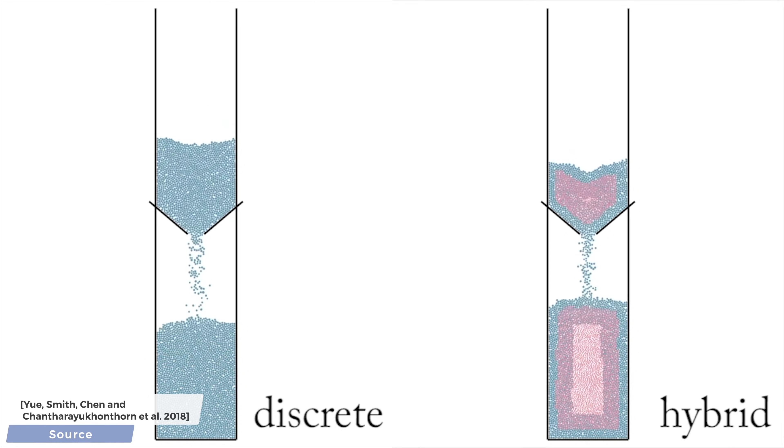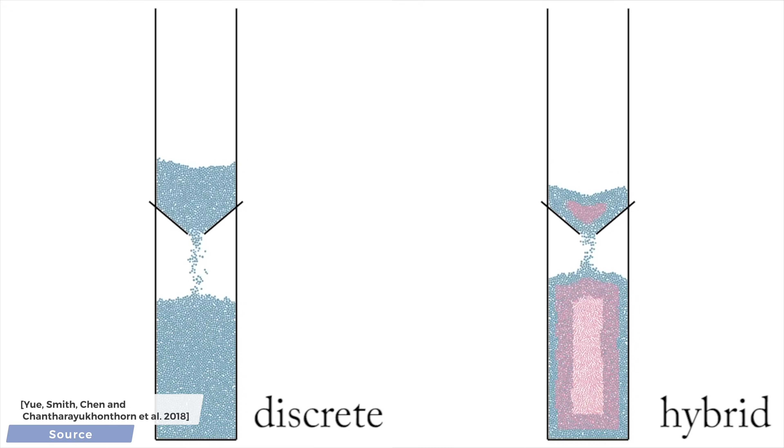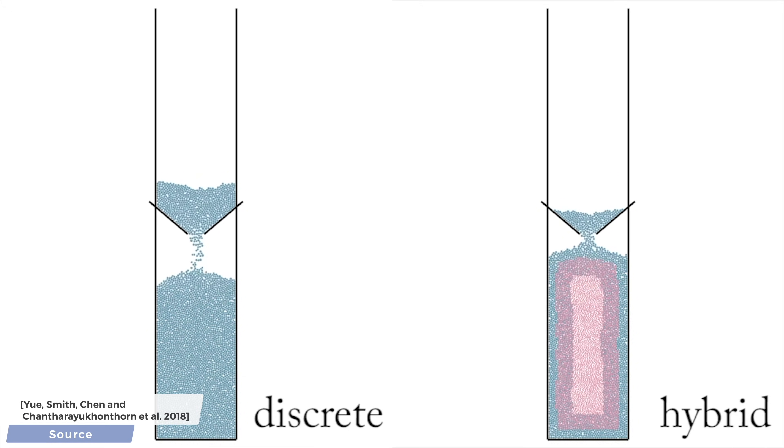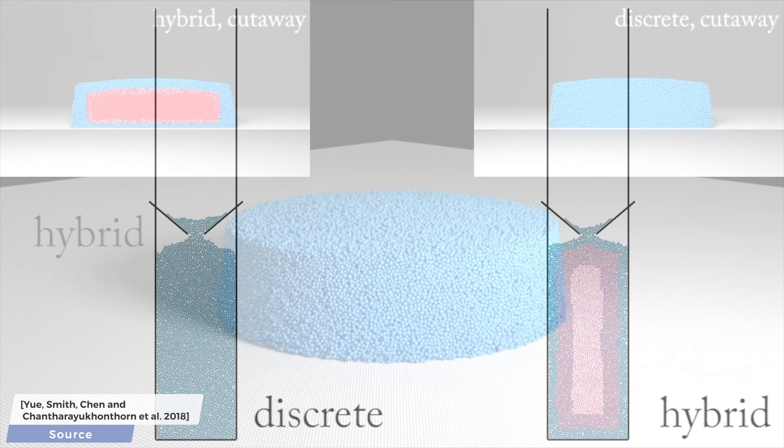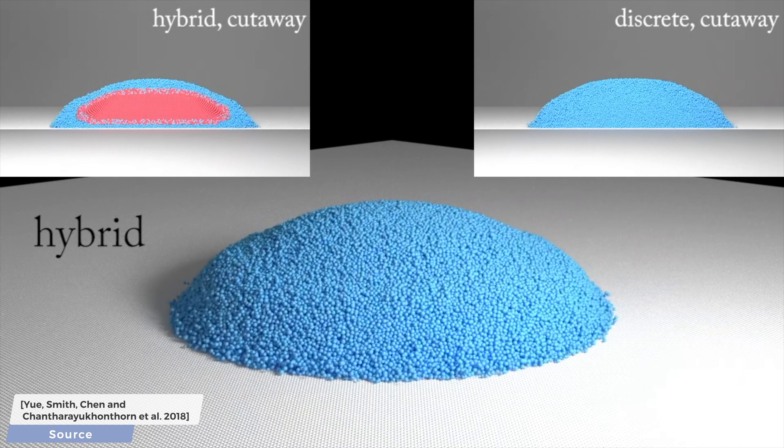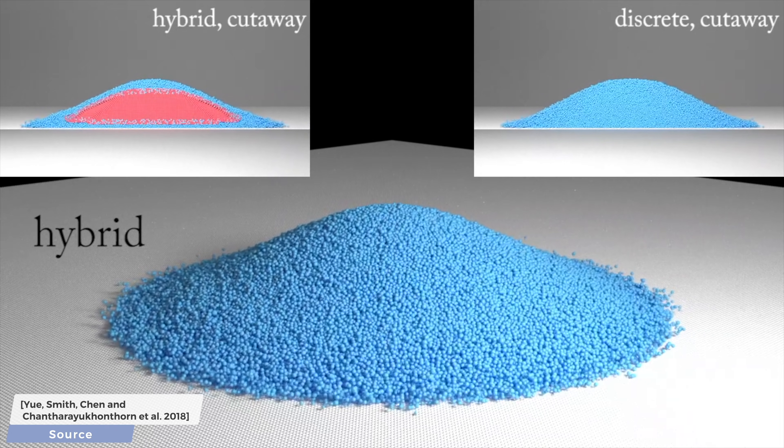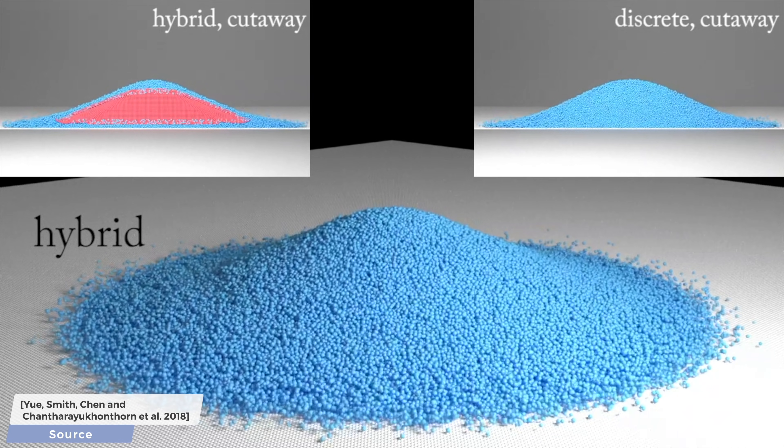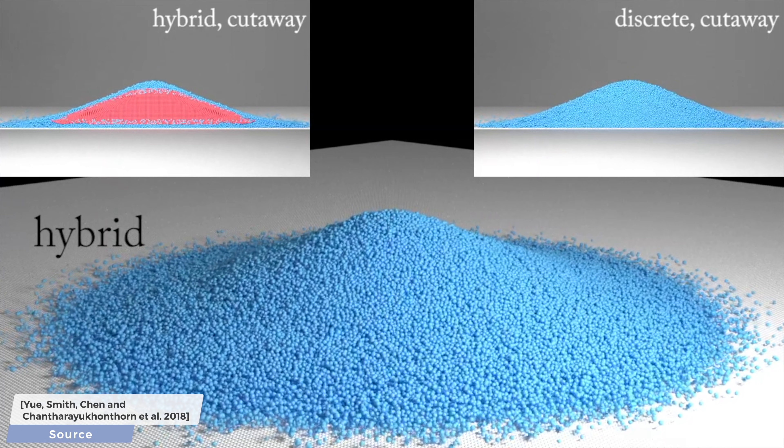In most cases, it means that 88% fewer discrete particles need to be simulated, and this can lead to a total speedup of six to seven times over that simulation. Basically, at least six all-nighter simulations running now in one night. I'm in. Sign me up.